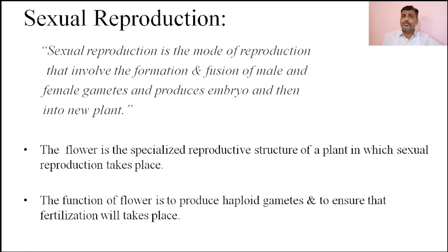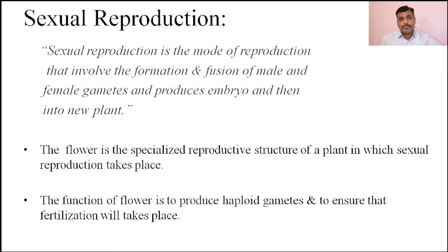This is all about sexual reproduction. In the next lecture, we will discuss the process of sexual reproduction which takes place in angiospermic plants by means of the flower. First we have to discuss the structure of the flower, then the different types of reproductive parts of the flower, and the development of male and female gametes of the flower. That portion we will discuss in the next lecture. Thank you.